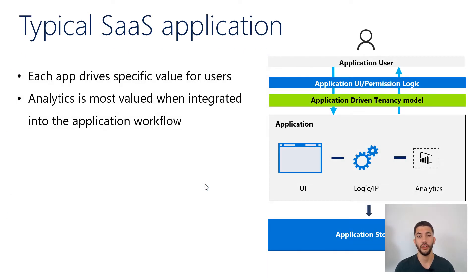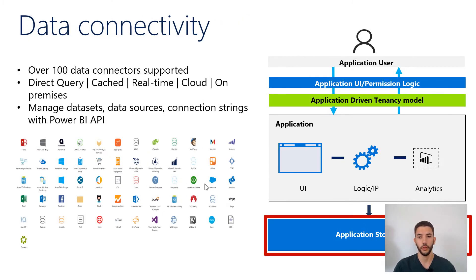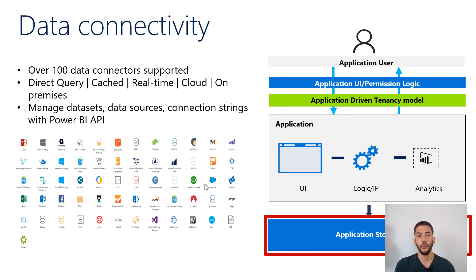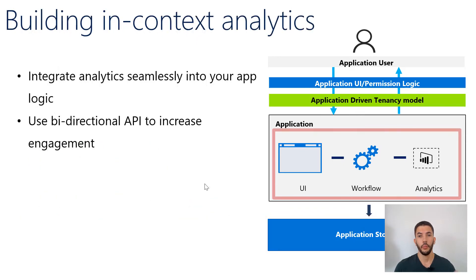Looking at typical SaaS applications: each app drives specific value, and analytics are most valuable when integrated into the application workflow. Power BI supports over 100 data connectors and supports direct query, cached mode, and real-time. Your data can be in the cloud or on-premises, and you can manage your datasets and data sources using the Power BI APIs. Above that, the application layer lets you integrate analytics into your app logic and use a bidirectional API to increase engagement, so you can take real actions from your data.